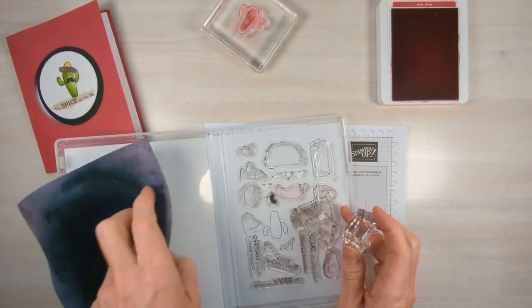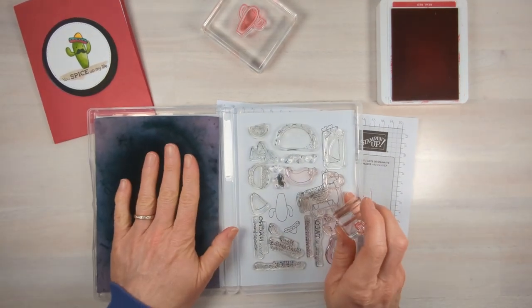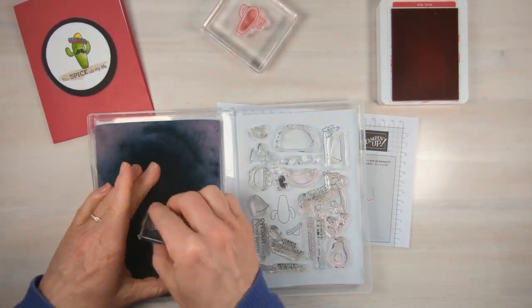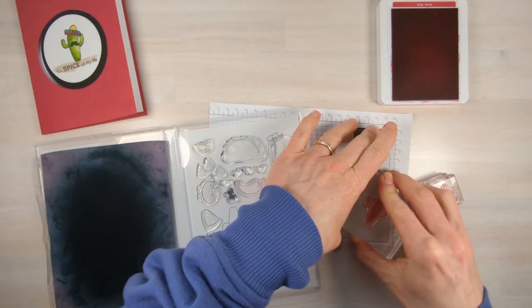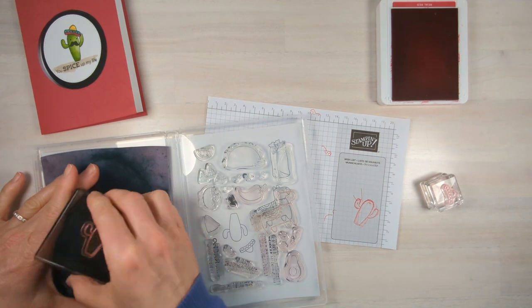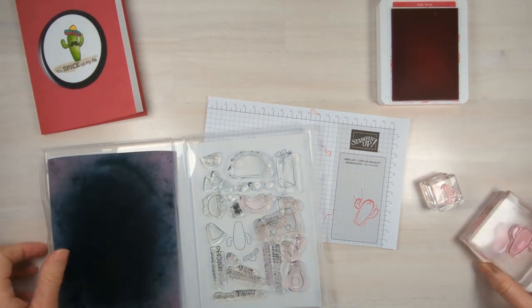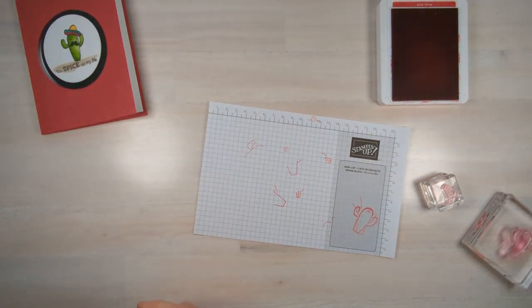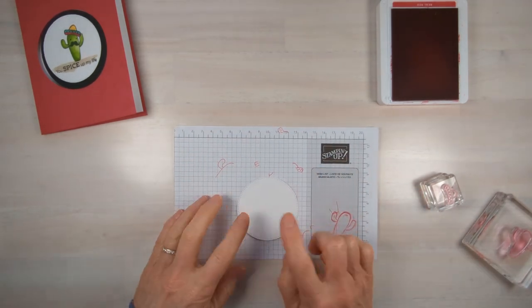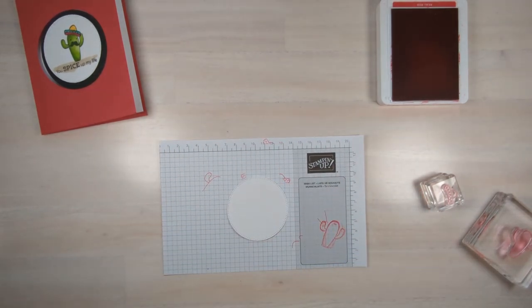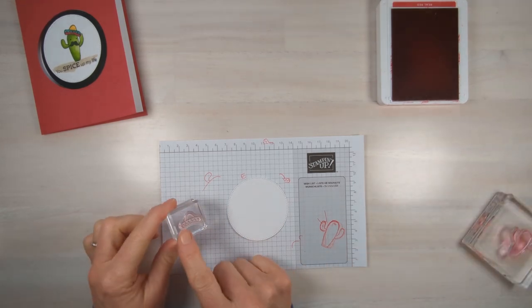Now I love just having my chamois right here, especially on stamp sets where I'm going to be taking the stamps on and off because there are multiple pieces. So we're going to wipe this off so that we can use our black. You're going to grab your white and you're going to start with the sombrero.